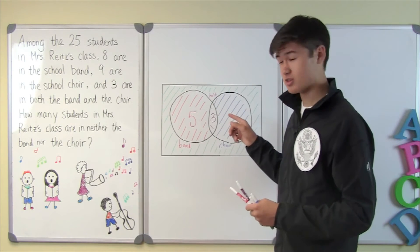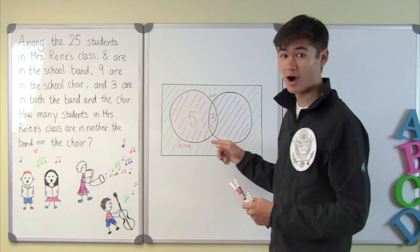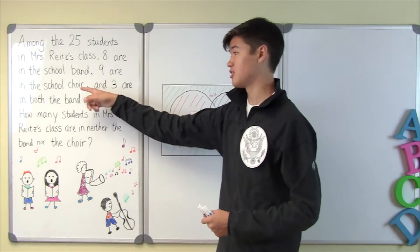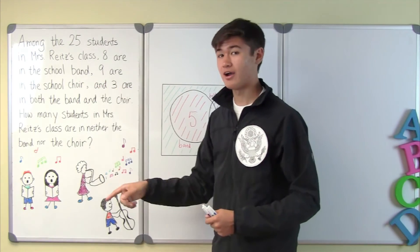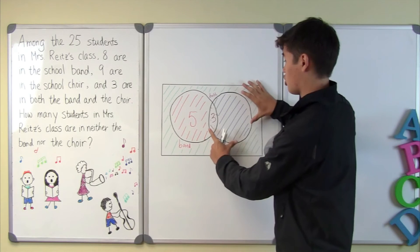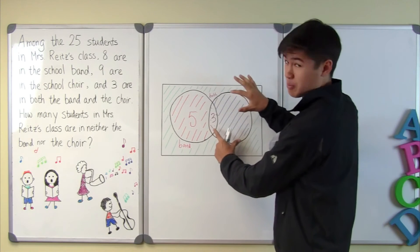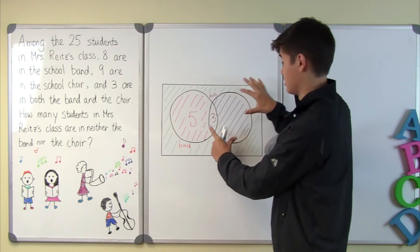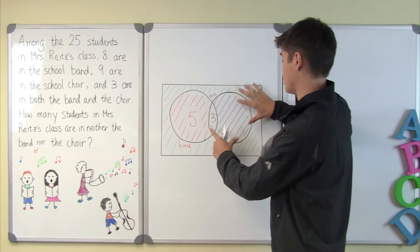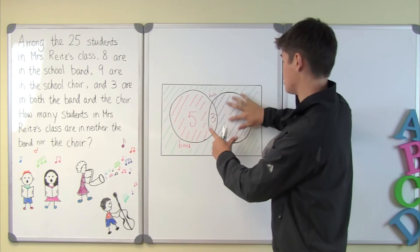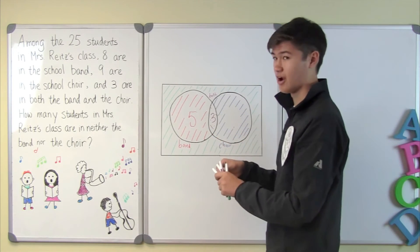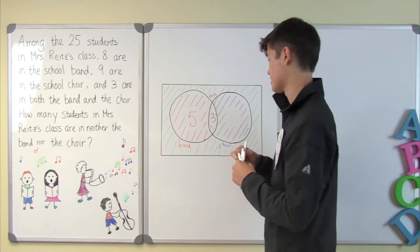Now let's look at the students who are in choir. The question tells us that 9 are in the school choir, which is this circle — the blue and the purple section. Since we already know there are 3 in the purple section, we just do 9 minus 3 to find how many are only in choir, which is 6.